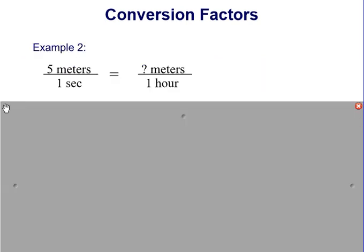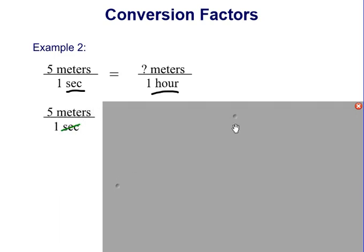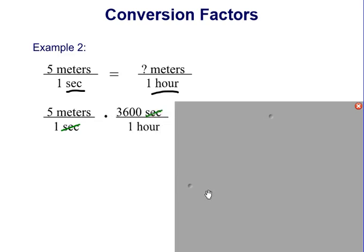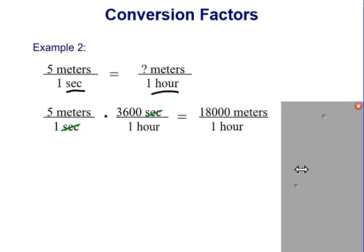Another example: five meters per one second equals how many meters in one hour? We're moving from seconds to hours, and we know there are 3,600 seconds in one hour. We multiply five meters per second by 3,600 seconds over one hour. The seconds cancel out, and five times 3,600 gives us 18,000 meters per hour.